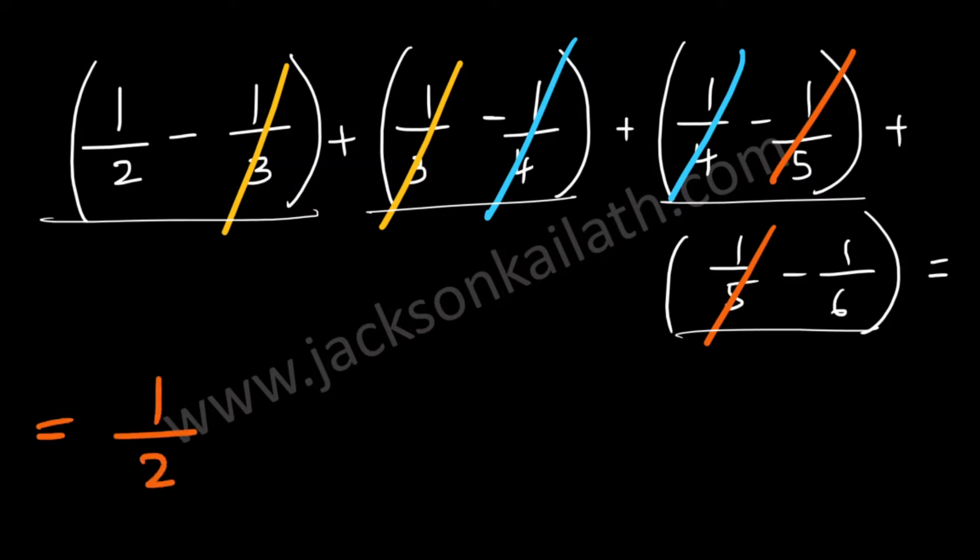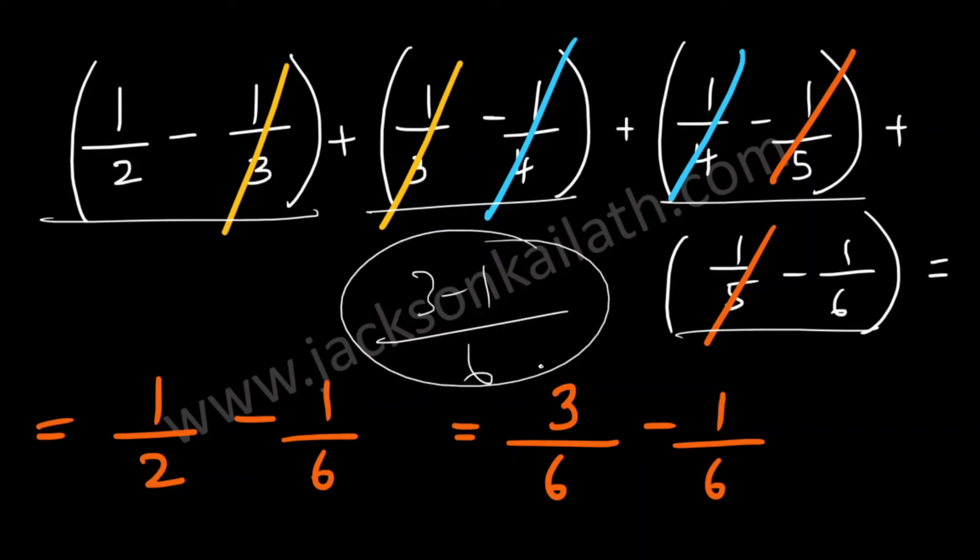You're left with 1/2 minus 1/6. So 1/2 can be written as 3/6, so 3/6 minus 1/6 which is equal to 3 minus 1 by 6. If you have the same denominator you can simplify it like this. You just do the operation on the numerators and then keep the denominator the same.